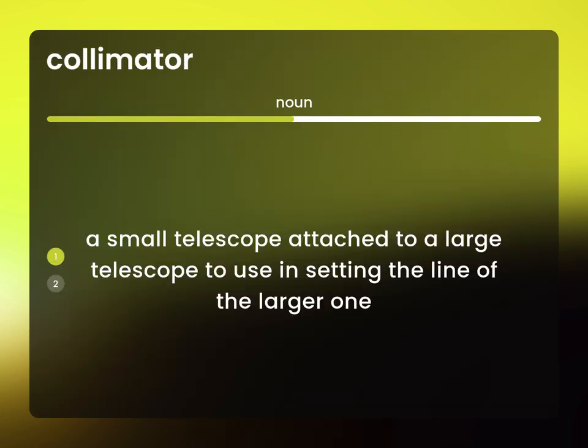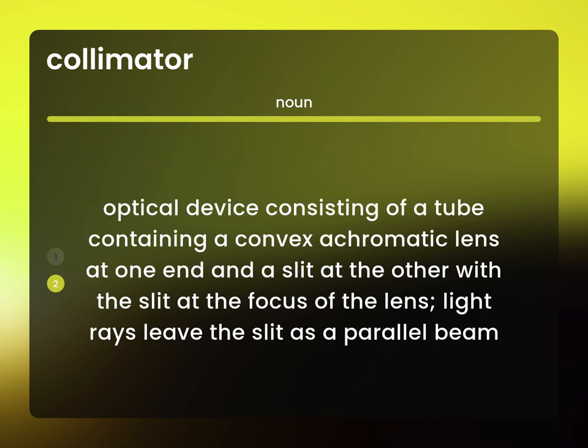A small telescope attached to a large telescope, used in setting the line of the larger one. An optical device consisting of a tube containing a convex achromatic lens at one end and a slit at the other, with the slit at the focus of the lens. Light rays leave the slit as a parallel beam.